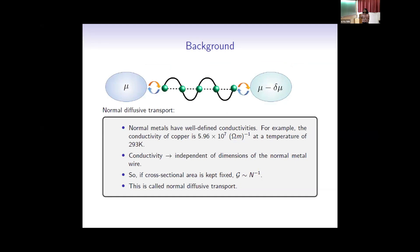Let me give some brief background of transport classification. Let's say we have a central system connected with two baths at the same temperature and different chemical potential — mu and mu minus delta mu. The particle will obviously flow from higher to lower chemical potential, and in the non-equilibrium steady state, there will be a current. We can see the current scaling with the system size of the central system.